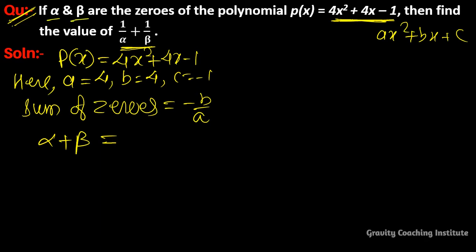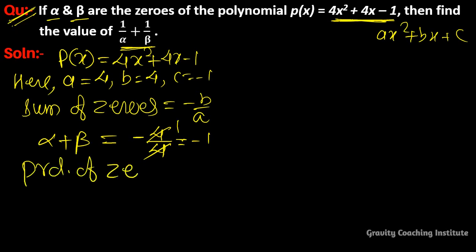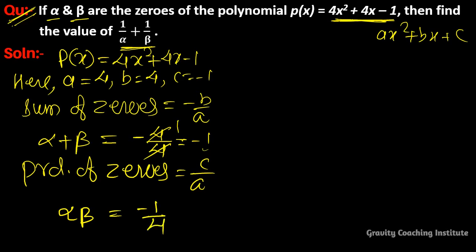Since alpha and beta are the zeros, sum of zeros = -4/4 = -1. And product of zeros = c/a, so alpha × beta = -1/4.